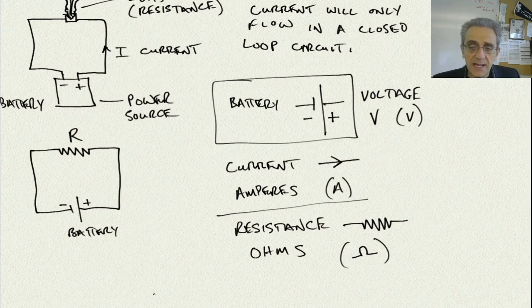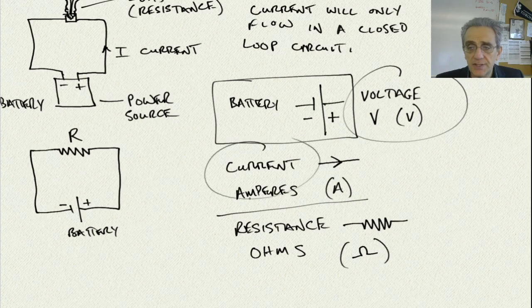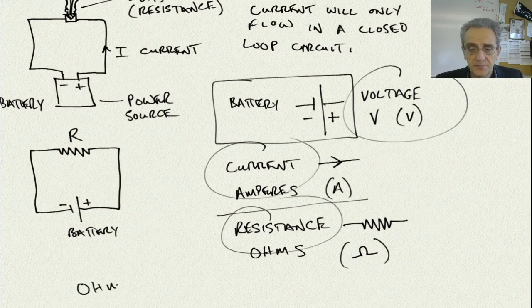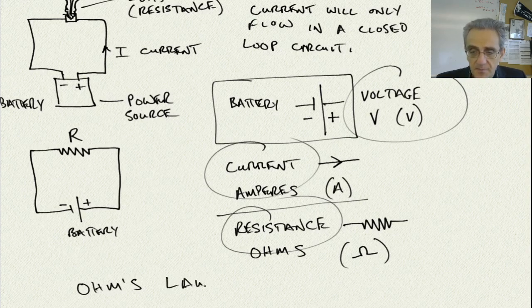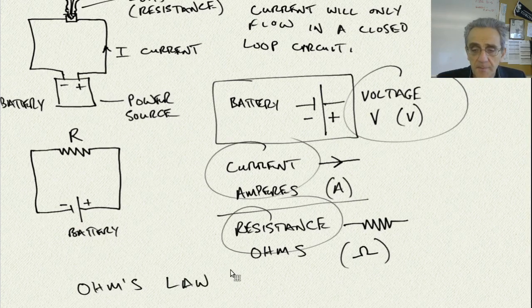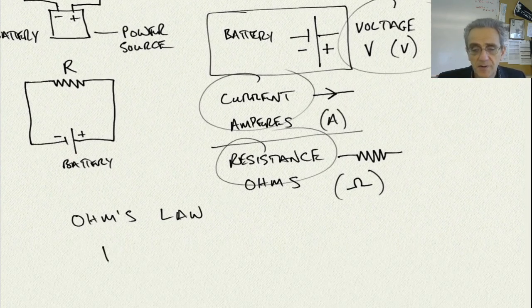These quantities are all related. Voltage, current, and resistance are all related through Ohm's Law. Ohm's Law is the equation V equals IR.